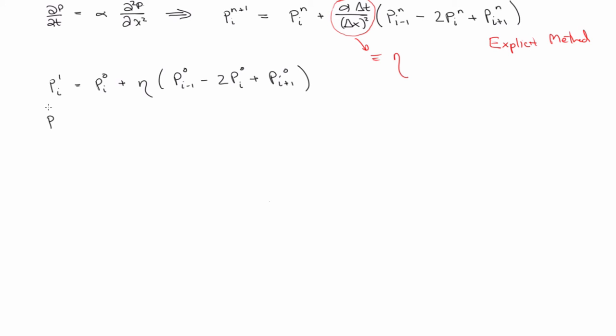So n will be equal to one. So we'd solve this equation. Now we know p1i. And we can plug it into the second equation, and we know p2i. And we just keep going.